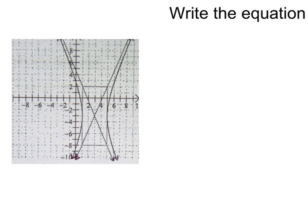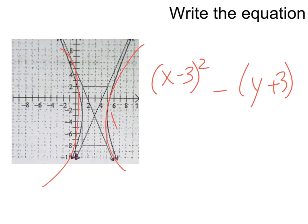The next thing that they might ask us to do would be to write the equation. So when I look through this one, I need the center, which I'm finding to be three, negative three. And since this opens on the sides, that means the x comes first. So x minus three squared, and then minus y, that's a negative three, so plus three squared. It's going to equal one as my basic format. So now I need to figure out what goes in the denominators.